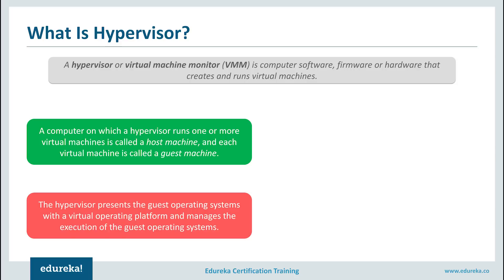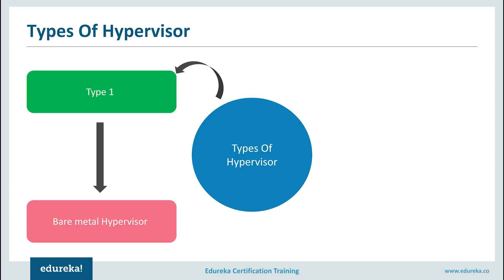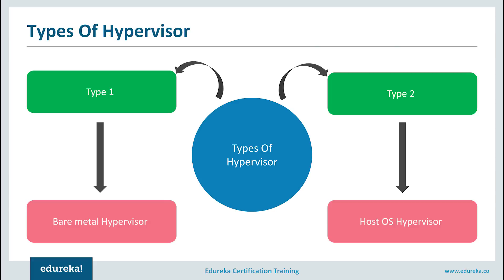There are two types of hypervisors. We have type one, which is your bare metal hypervisor, and type two, which is the host OS hypervisor. A bare metal hypervisor runs directly on the hardware — I have hardware with a firmware or hypervisor integrated into the architecture that lets me create virtualization. A host OS hypervisor sits on top of an existing operating system and lets me have an emulated environment or another operating system running on it.